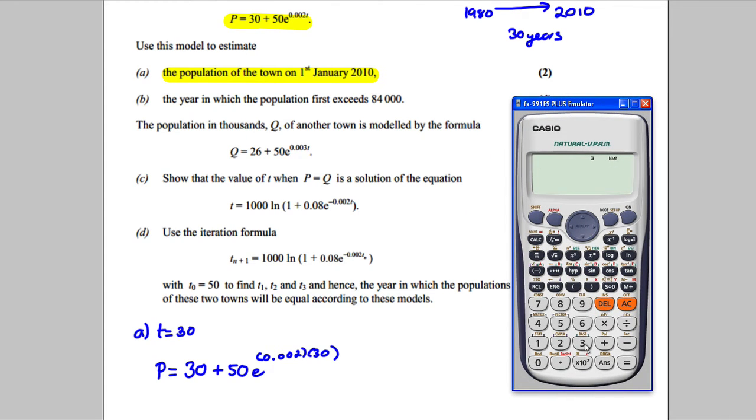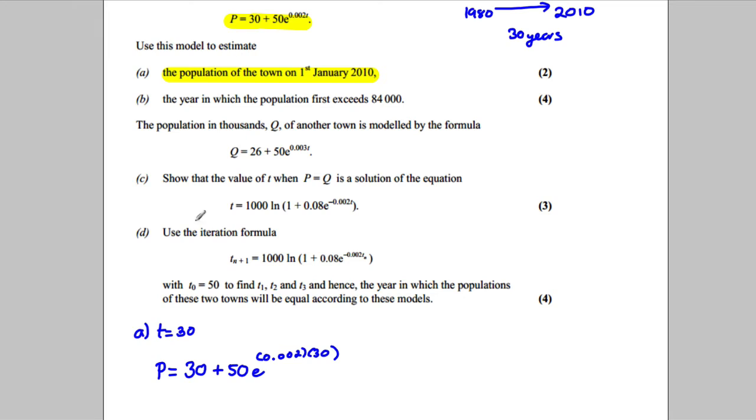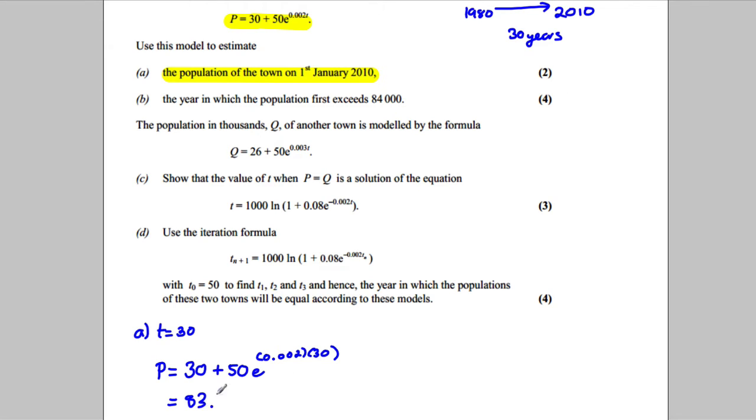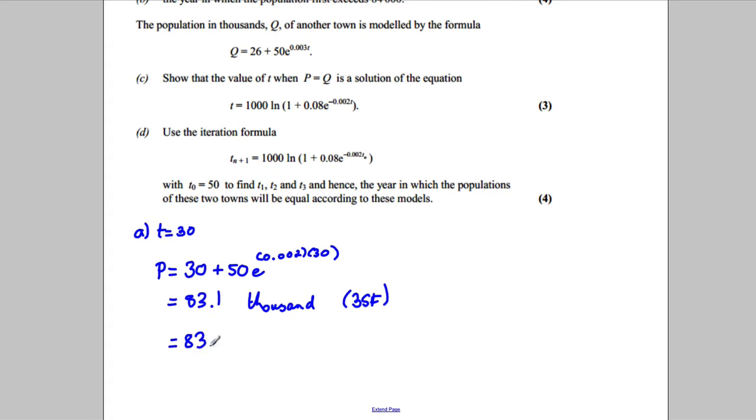Let's type that in the calculator here. So we're going to type in 30 plus 50 e to the power of, let's put brackets in, 0.002, close brackets, 30 for T, and you get 83.09. Now it says an estimate and it doesn't tell us what significant figures, so let's assume it's three significant figures as we always do in the paper if we're not told. So that's 83.1 thousand to three significant figures. And we might even just say that's 83,100 to three significant figures again.